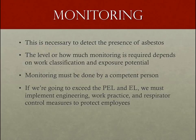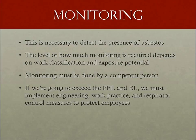If the exposure has the potential to be above the PEL or excursion limit, employers must use proper engineering controls and work practices to the extent feasible to keep it at or below the PEL and excursion limit. Where feasible engineering controls and work practices do not ensure worker protection at the exposure limits, employers must reduce exposures to the lowest level achievable and then supplement with proper respiratory protection to meet the PEL requirements. The construction and shipyard standards contain specific control methods depending on work classification, and the general industry standard has specific controls for brake and clutch repair work.